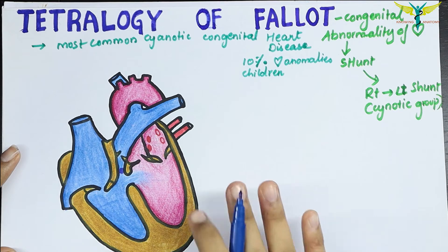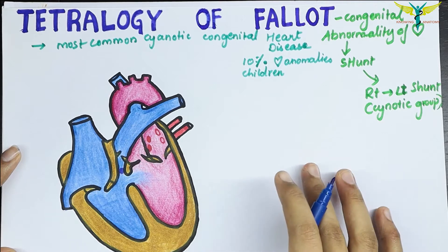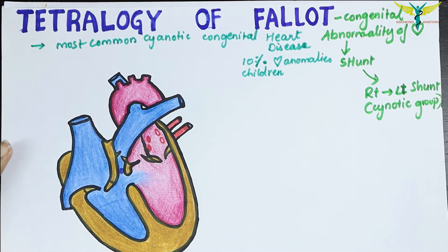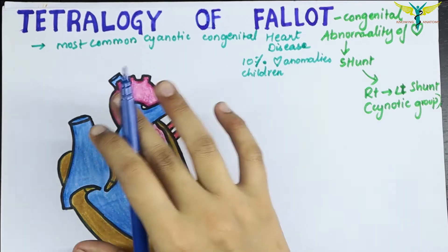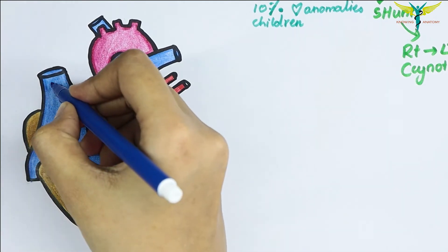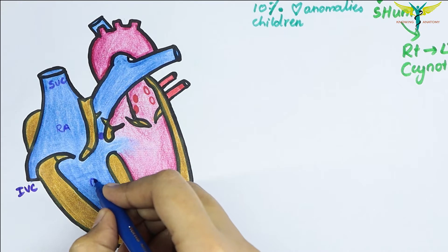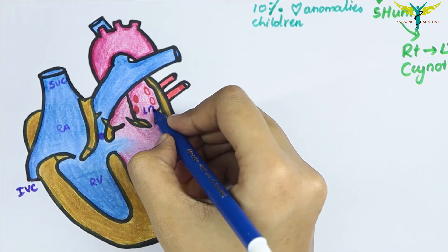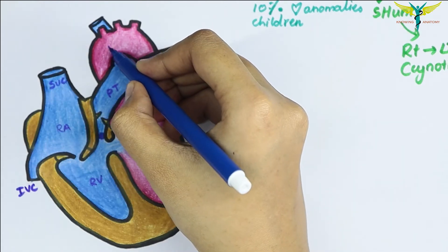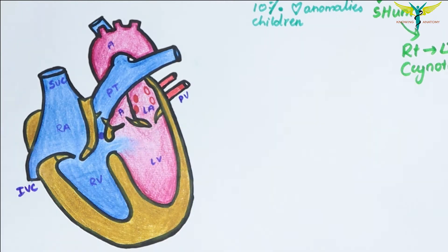There are mainly four features in Tetralogy of Fallot — that is why the name 'tetralogy' was given. The four features are: the ventricular septal defect (VSD), the displacement of the aorta to the right side, pulmonary stenosis or obstruction, and right ventricular hypertrophy. Let's see these in a diagram showing the superior vena cava, inferior vena cava, right atrium, right ventricle, left ventricle, left atrium, pulmonary trunk, aorta, pulmonary veins, and the start of the aorta.